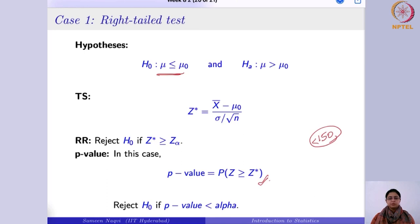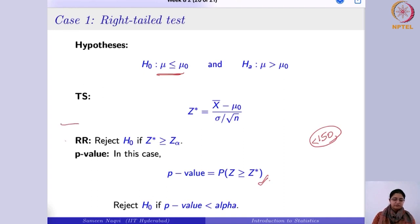In both approaches we first write the null hypothesis, check the conditions, and write the test statistic. Up to this point both approaches are the same. Then they diverge: in the rejection region approach you find z_α, and in the p-value approach you find the p-value instead.